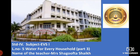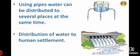We have finished with the two parts of this lesson and now we will continue. In our previous video, we had seen how using pipes, water can be distributed to several different places at the same time, and also how water is distributed for a human settlement. Now we will proceed further.